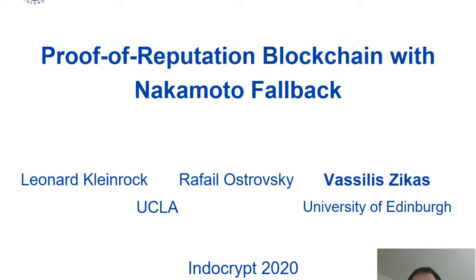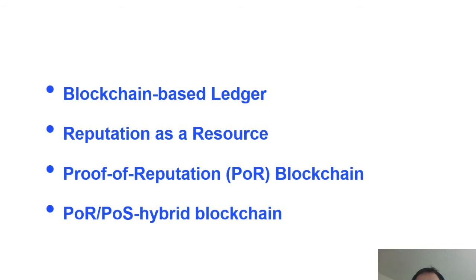Hi, this is Vasily Zikas and I'm going to present the work on Proof of Reputation Blockchain with Nakamoto Fallback, which is joint work with Lentline Rock and Rafa Ostrovsky. I will start with an abstract discussion of what a blockchain ledger is, then discuss how we can use reputation as a resource, then focus on our construction of a Proof of Reputation blockchain, and finally discuss how we address an inherent issue in reputation as a resource via a backup Proof of Stake or Nakamoto-style blockchain.